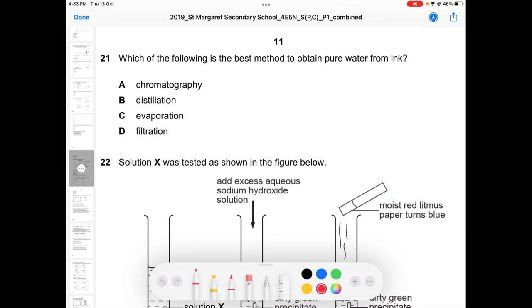I'm going through St. Margaret Prelim paper 2019. The first question is question 21. 16 of you got it wrong, most of you chose A and B, but B is the correct answer.